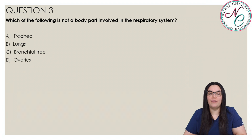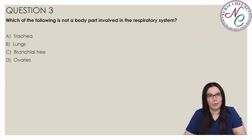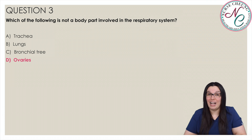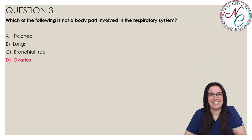Which of the following is not a body part involved in the respiratory system? Is it A, trachea; B, lungs; C, bronchial tree; or D, ovaries? This one was a little bit easy — the correct answer is D, ovaries.